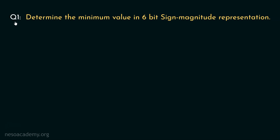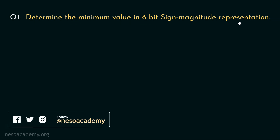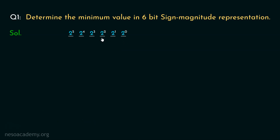Consider the first question: determine the minimum value in 6-bit sign-magnitude representation. We will have to find out the smallest 6-bit number in sign-magnitude representation. For a 6-bit unsigned number, the place values would be 2^0, 2^1, 2^2, 2^3, 2^4, and 2^5. Since this is sign-magnitude representation, the MSB will signify the sign.